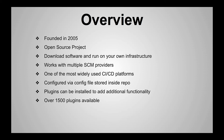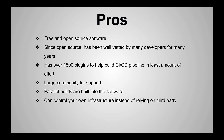Jenkins has over 1,500 plugins available — I'll leave a link in the description to the plugins homepage so you can check out all the different functionality they offer without having to reinvent the wheel. The pros for Jenkins: it is free and open source software, well-vetted by many developers over many years. Those 1,500+ plugins will drastically help with building your CI/CD pipeline. It has a large community for support. Parallel builds are built into the software, so as long as you have the infrastructure it's easy to set up. You also control your own infrastructure instead of relying on a third party.